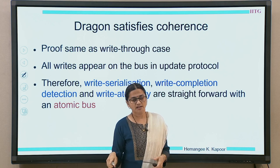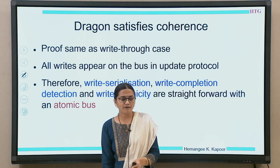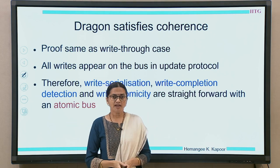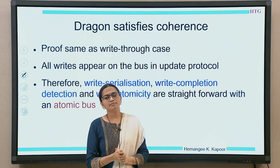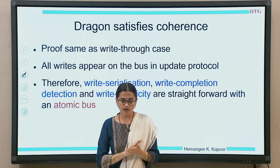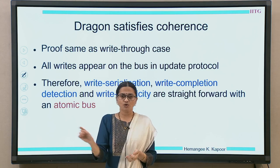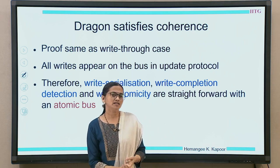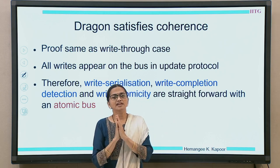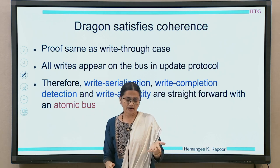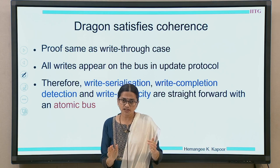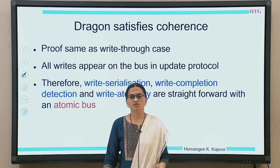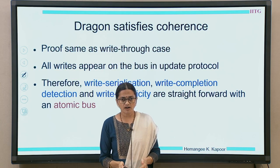Regarding coherence: Dragon satisfies coherence. The proofs are very similar to the write-through (VI protocol) case. In an update-based protocol, all writes appear on the bus — write-through and update are similar in this respect. Every change goes onto the bus, the bus serializes everything, and therefore write serialization, write completeness, write propagation, and write atomicity are all satisfied with an atomic bus.